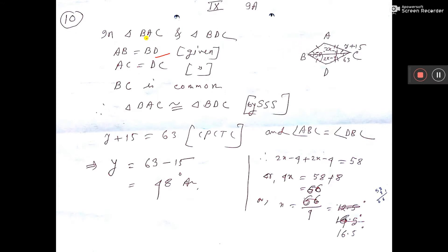So I have taken triangle BAC and BDC. In the question it is given AC equal to DC. That also I have written here. And BC is common. So we can tell these two triangles are congruent by side side side.